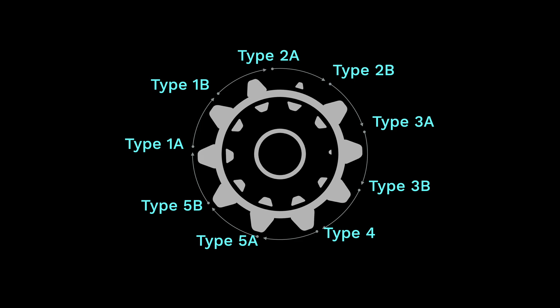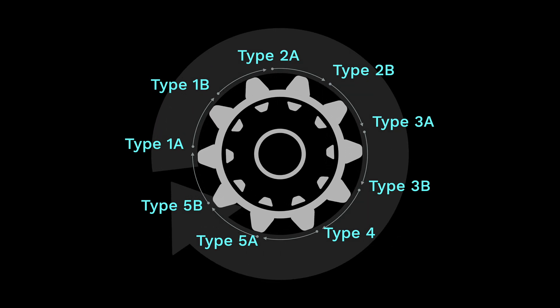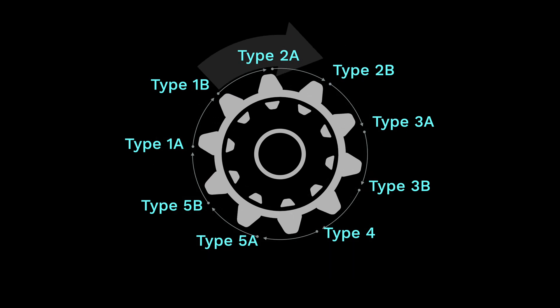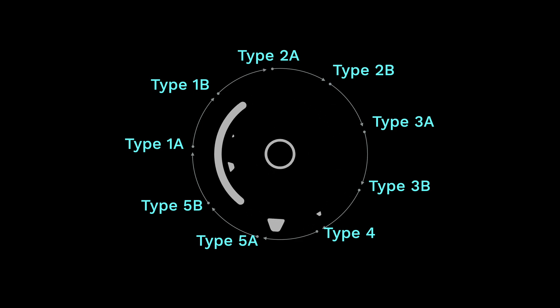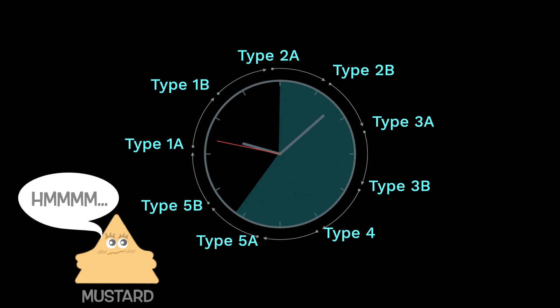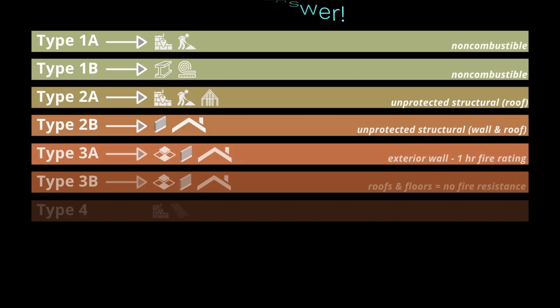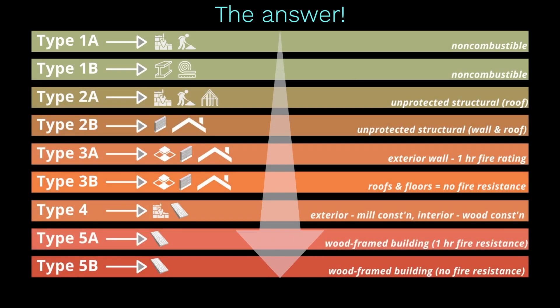So what did you notice as we transition from construction Type 1A to construction Type 5B? This might seem obvious for some architecture students and professional viewers, but for the laypeople, clients, and young students out there, what did you observe? I was hoping you could think about it for a while. You may pause this video to take your time. As we go along from 1A to 5B, we approach a more hazardous construction type. I made this illustration to summarize the things I discussed a few moments ago.